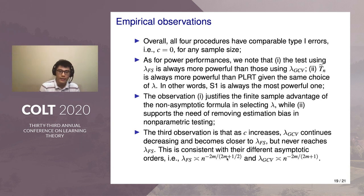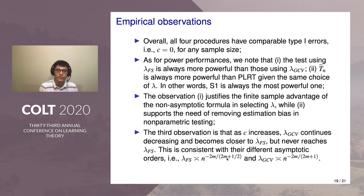Due to time constraints I will not dive into those results — they are all in the paper — but I want to point out some key observations. First, when the sample size is small to moderate, our non-asymptotic procedure for selecting the tuning parameter, as well as our testing procedures, tends to be much better than the asymptotic counterparts. When the sample size is large, they tend to have comparable performance. However, the procedure of selecting the tuning parameter by cross-validation is usually suboptimal, because that lambda only reflects information in the regression setting, which is very different from the detection problem.